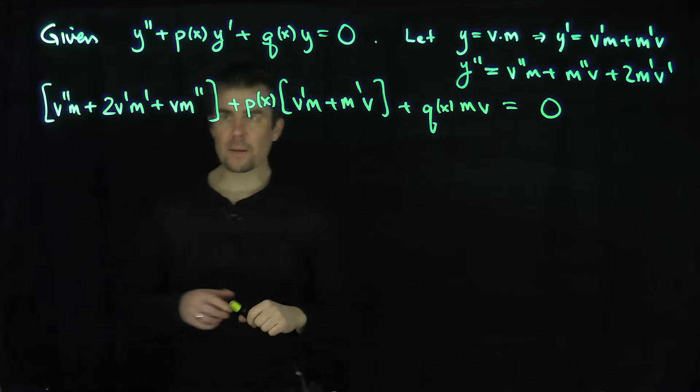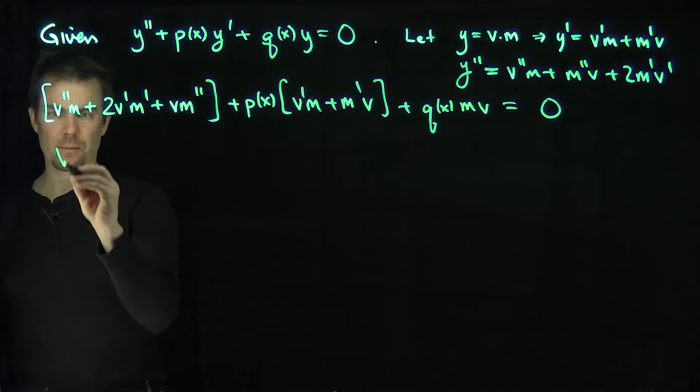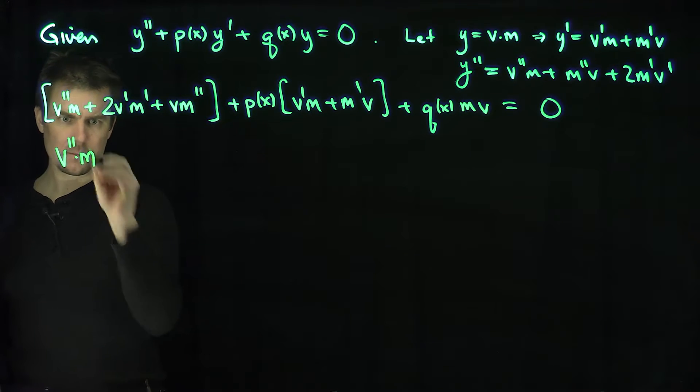So I made the problem look a little bit messier, but now the key is that I have only one term with a v double prime here. So v double prime times m.